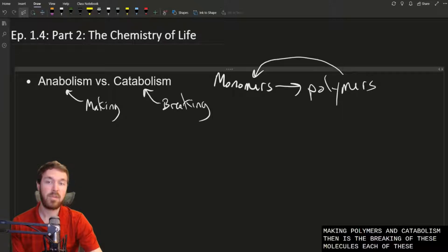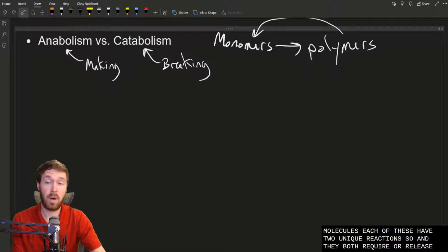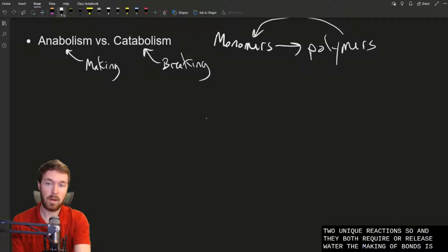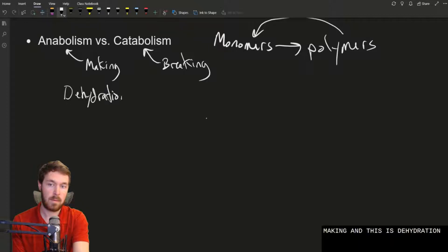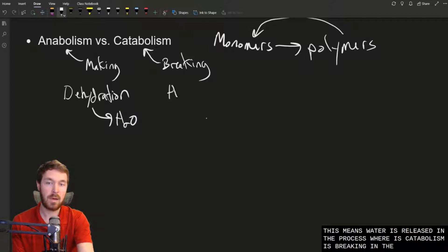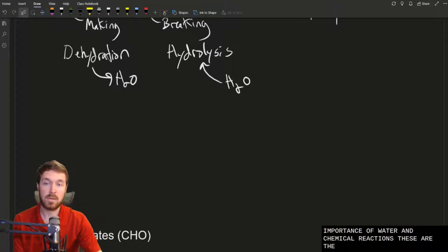Each of these have two unique reactions, and they both require or release water. The making of bonds is called a dehydration reaction. This means water is released in the process. Whereas catabolism is breaking, and this is called a hydrolysis reaction, which literally means water splitting. So this one requires water. Remember when we talked about the importance of water in chemical reactions? These are those two key chemical reactions.